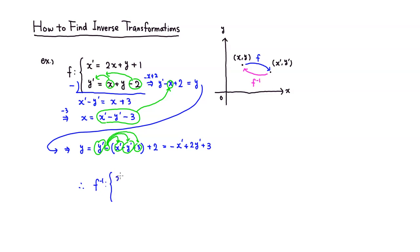So we solved for x and y, and therefore we have a formula for the inverse. x is equal to x prime minus y prime minus 3. Actually, I need to correct one thing — I forgot to add the plus 2, so combining positive 3 and plus 2 gives positive 5. So y is equal to negative x prime plus 2y prime plus 5. That's the formula for the inverse transformation. I hope that this was clear.